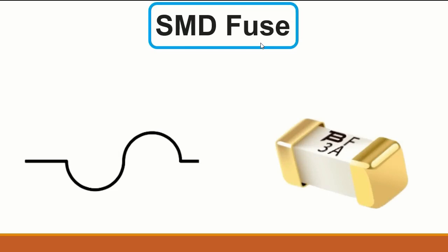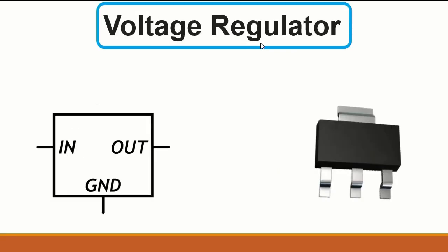Here we have the voltage regulator. We have already seen the THT (through-hole technology) voltage regulator, and now we have the SMD voltage regulator found in computer motherboards. It may look like a transistor or MOSFET, so always refer to the reference label to confirm. For a voltage regulator, you will find the input voltage on one pin, the output voltage on another, and two pins connected together for ground.